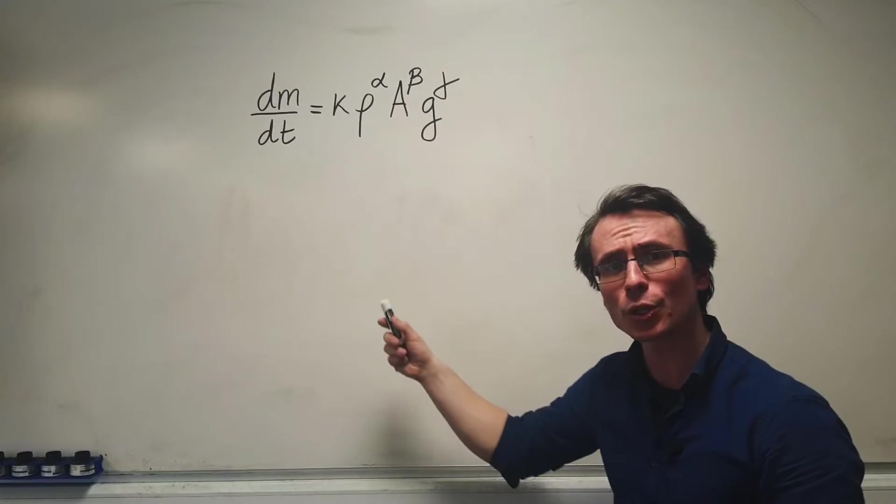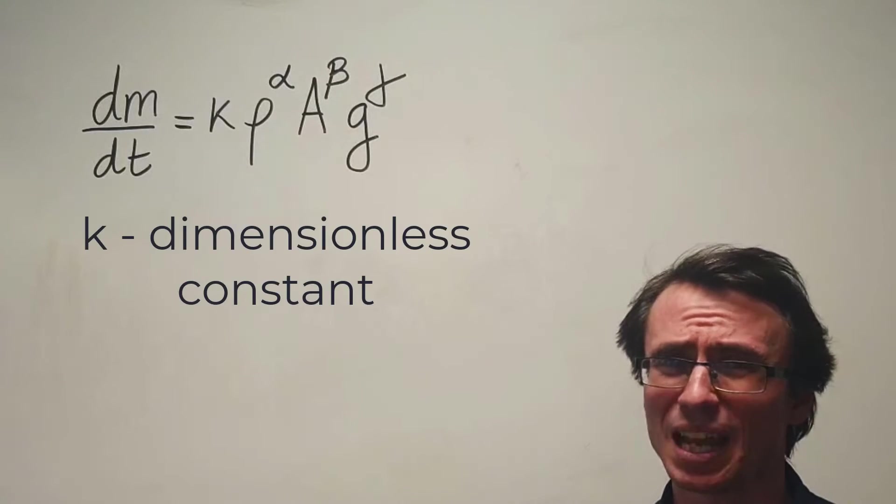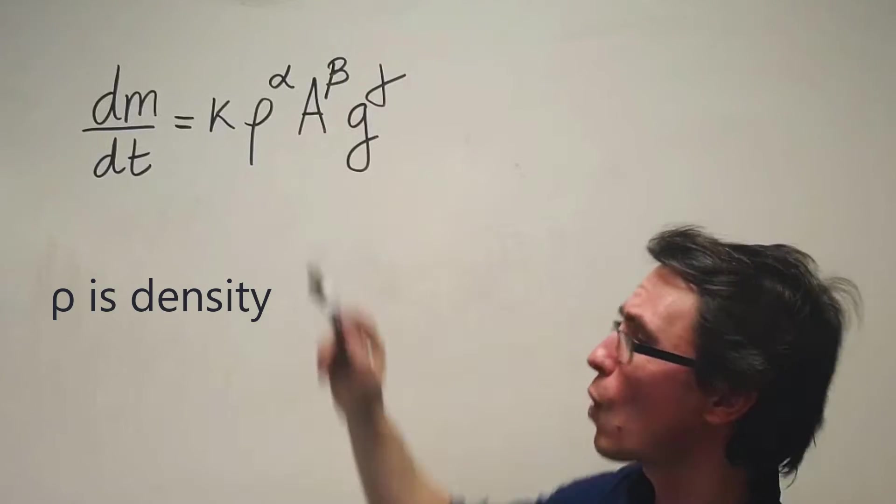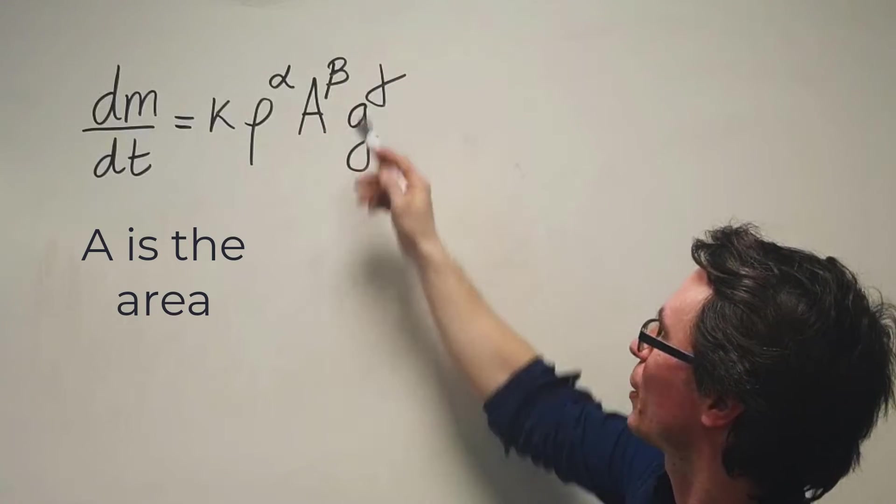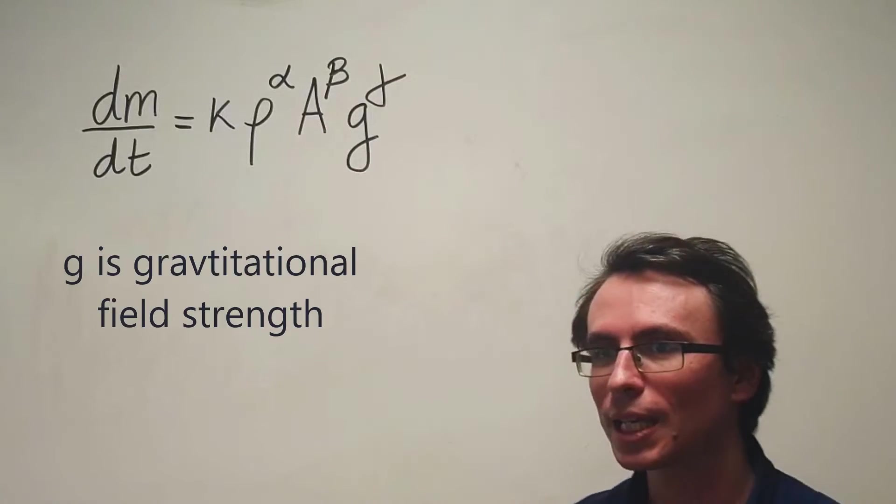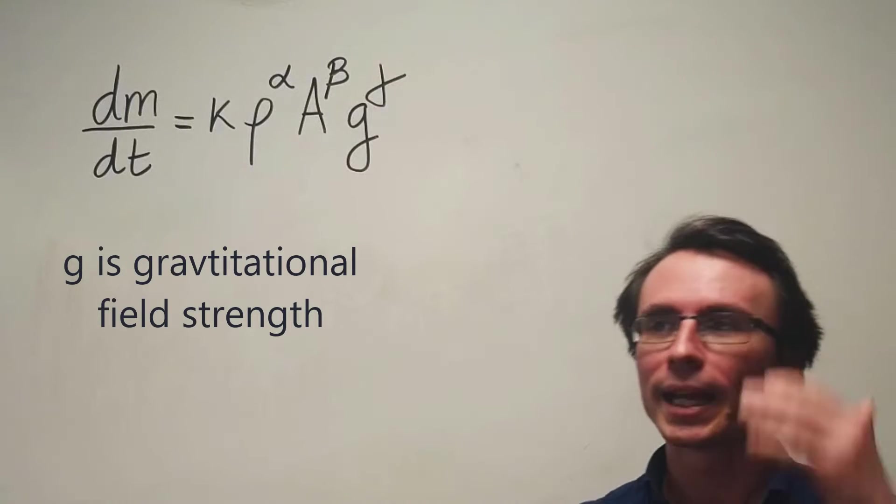We have a differential equation: dm/dt equals k, where k is a dimensionless constant, times ρ^α (density raised to power alpha), times A^β (area raised to power beta), times g^γ (gravitational field strength raised to power gamma).